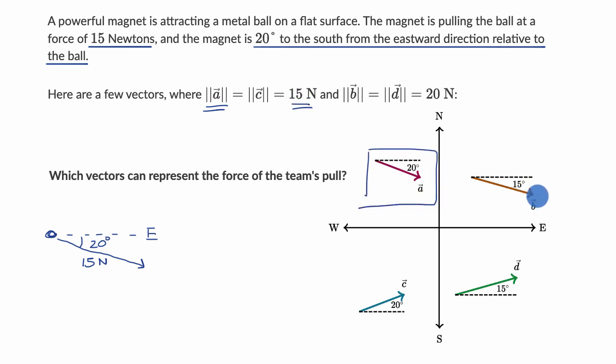Now let's look at B. Well, B looks 15 degrees south of due east, not 20 degrees south. So I will rule that out. And also B's magnitude is wrong. It's 20 newtons.